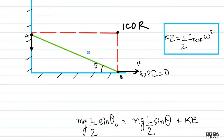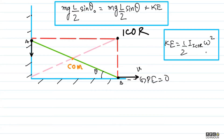The rod can be thought of as the diagonal of a rectangle. The ICOR is at the corner point — the intersection of the wall and floor. Using fixed-axis rotation about that point, the kinetic energy is ½·I_ICOR·ω².